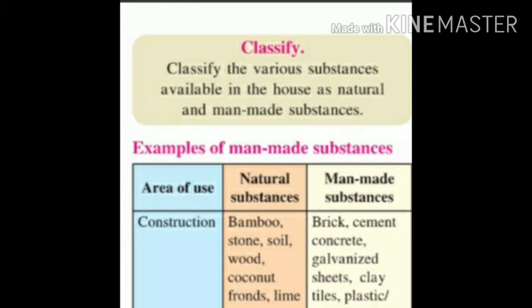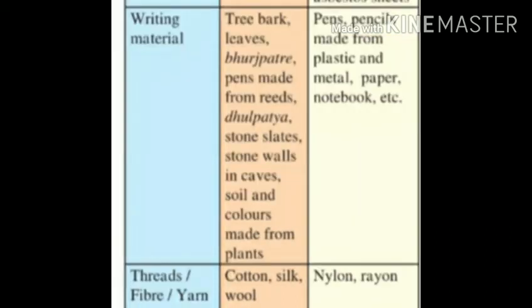Classify the various substances available in the house as natural and man-made. For construction, natural substances used include bamboo, stone, soil, coconut fronts, and lime. Man-made substances used in construction include brick, cement, concrete, and galvanized sheet. For writing materials, natural substances include tree bark, leaves, and bhurja patra; man-made includes stone, slate, and color.